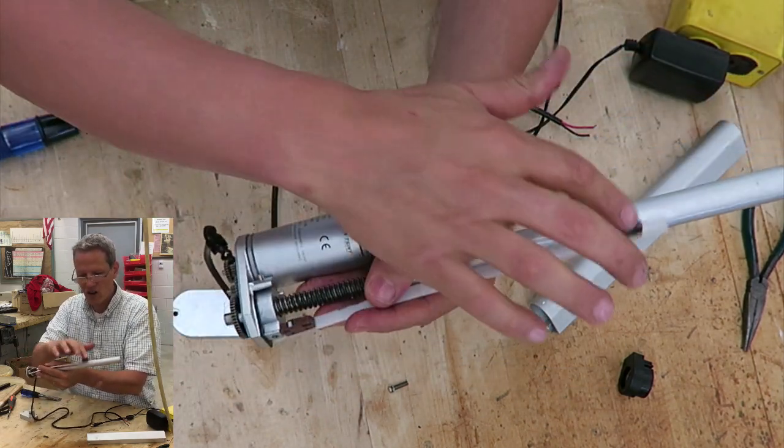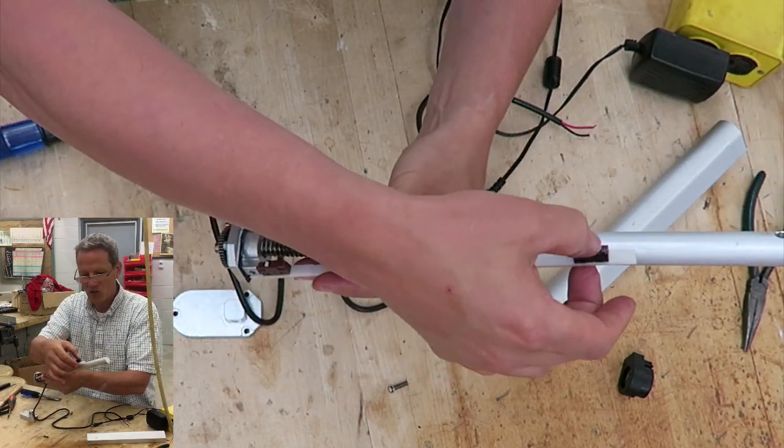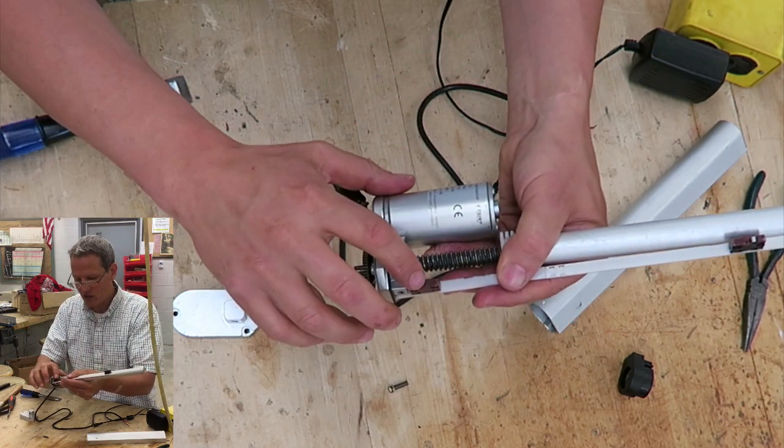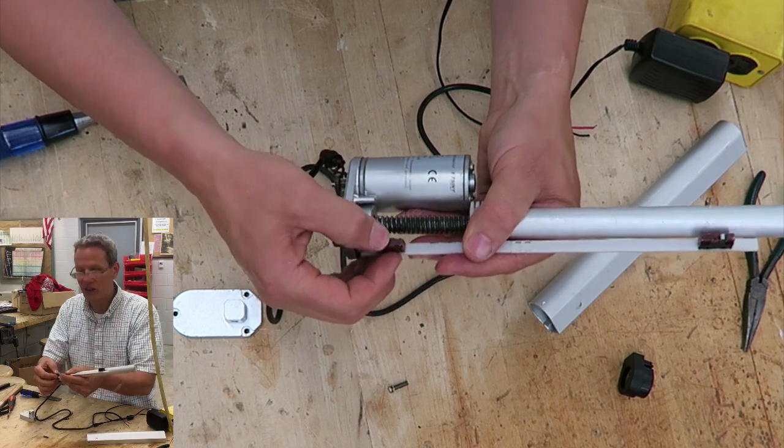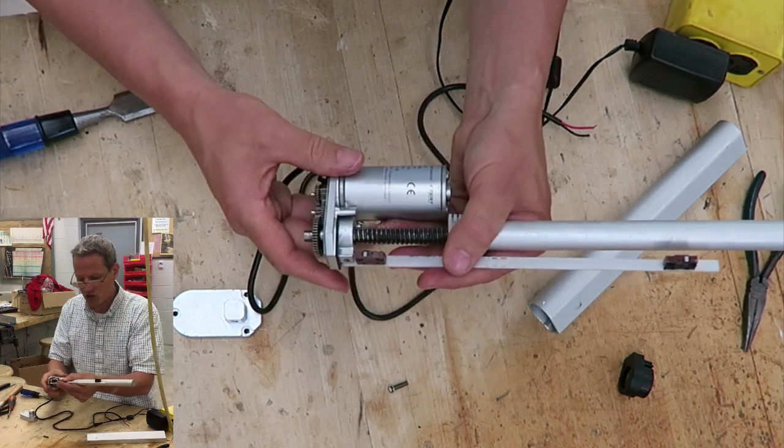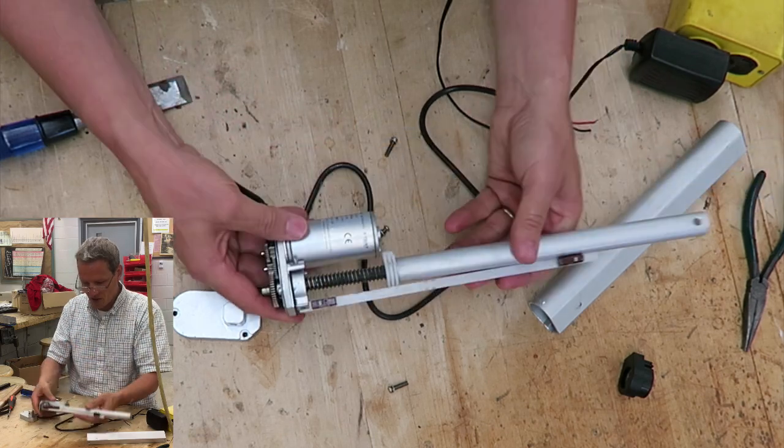These switches here are just that, they're stop switches. So when it gets to a certain position, it hits this stop switch and it turns it off. When it gets to the opposite position, it'll hit this stop switch and it'll turn it off. There you go.